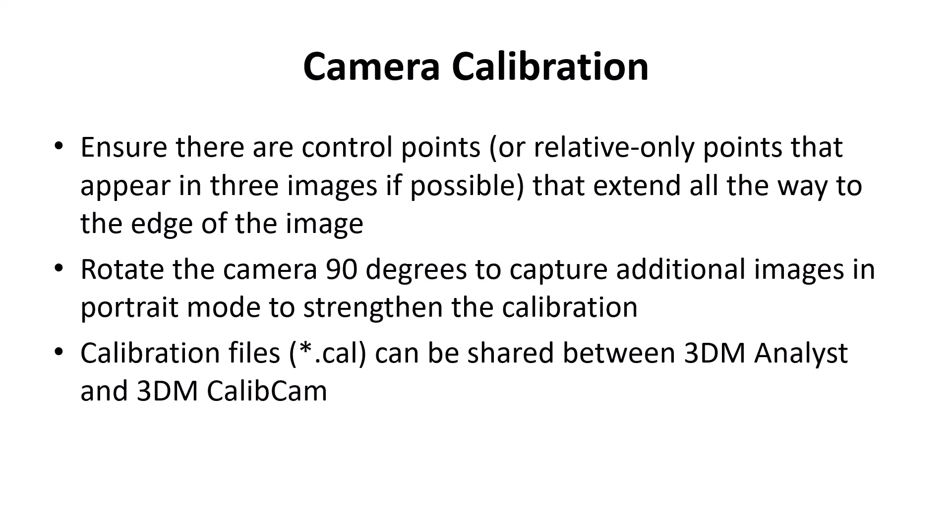Ideally, we would like to have some control points captured in the images and scattered across the full extent of the images when we perform a camera calibration. It's best practice to shoot both in landscape and portrait mode, rotating the camera so that you capture these ground control points in different quadrants of the image. Once you've done your calibration, you end up generating a .cal file, and that file can be exported out of CalibCam and imported into 3DM Analyst if needed.